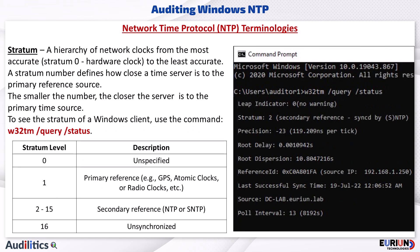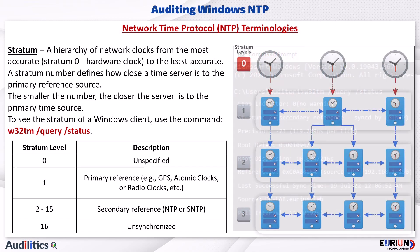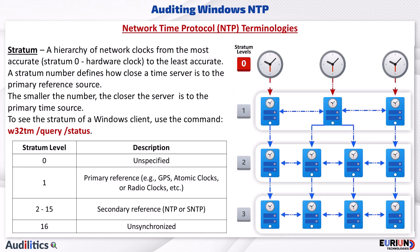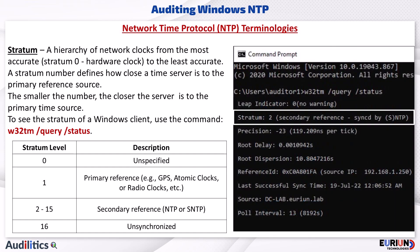Some of the terminologies used in configuring NTP includes: Stratum. A stratum is a hierarchy of network clocks from the most accurate, referred to as stratum zero, or a hardware clock, to the least accurate. A stratum number defines how close a time server is to the primary reference source — the smaller the number, the closer the server is to the primary time source. To see the stratum level of a Windows client, use the W32TM query status command.